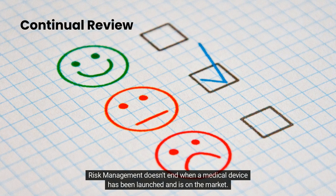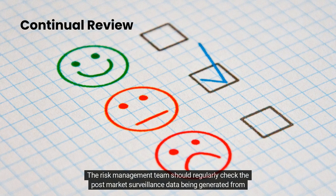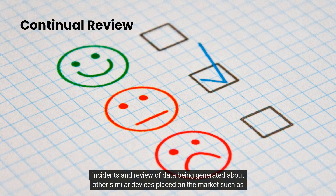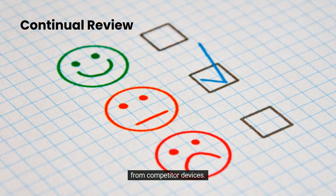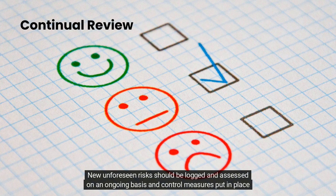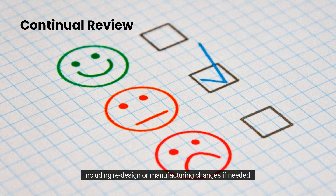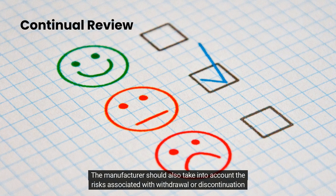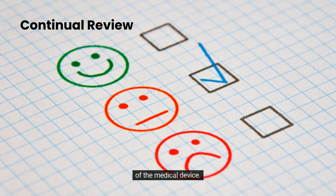Risk management doesn't end when a medical device has been launched and is on the market. The risk management team should regularly check post-market surveillance data being generated from within the quality management system — from manufacturing records, customer feedback, customer complaints, adverse incidents, and review of data from other similar devices such as competitor devices. New unforeseen risks should be logged and assessed on an ongoing basis, with control measures put in place including redesign or manufacturing changes if needed. The manufacturer should also take into account the risks associated with withdrawal or discontinuation of the medical device.